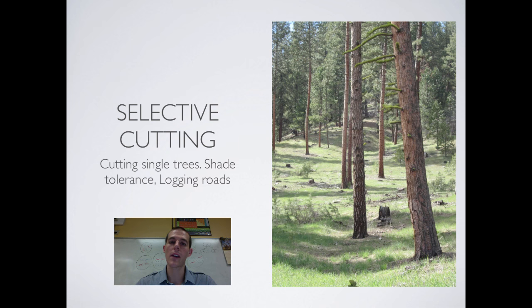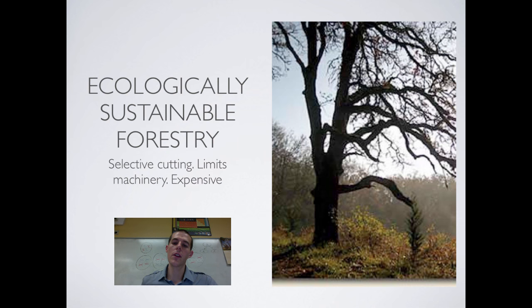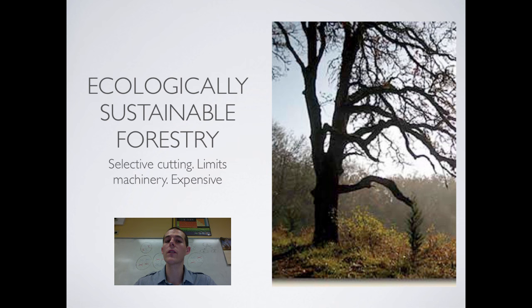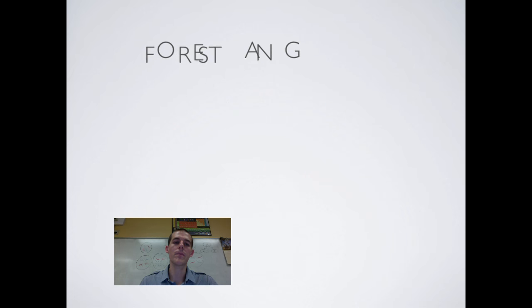In response, and to do forestry in the most sustainable way possible, there is ecologically sustainable forestry, which is built on the idea of selective cutting. It limits machinery, even going so far as to use horses, mules, and animals to pull trees out rather than machinery. The problem is that it is very labor-intensive and usually fairly expensive.